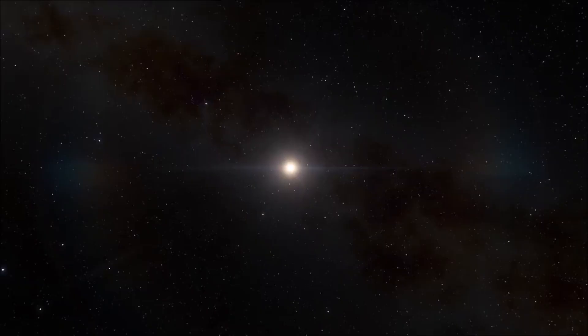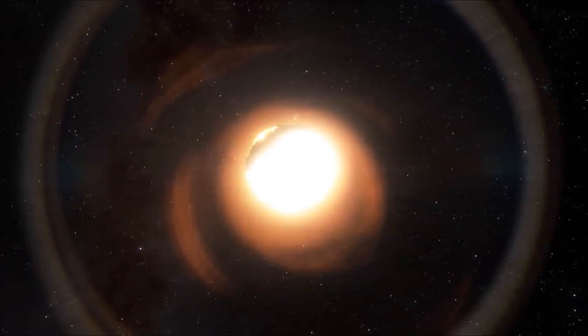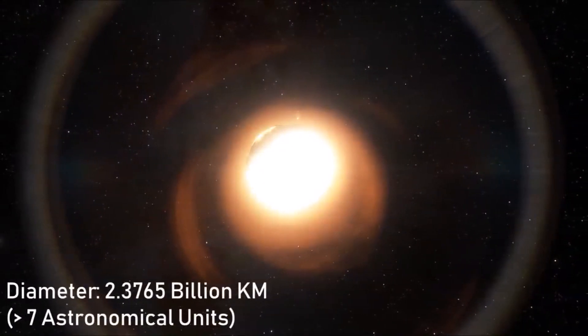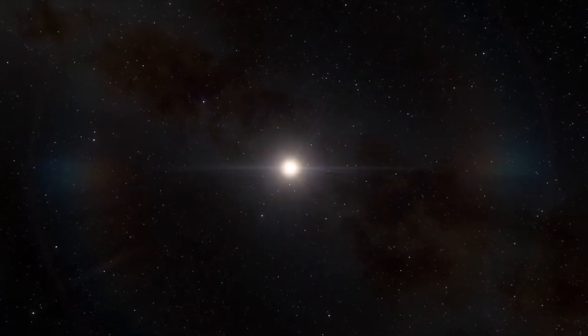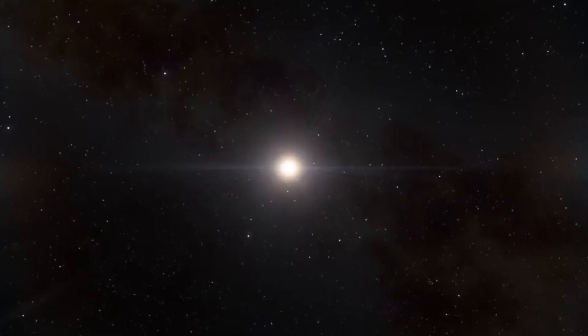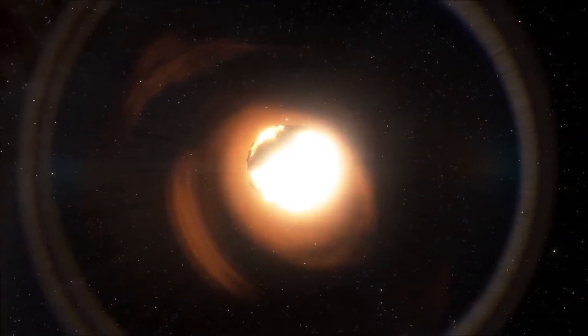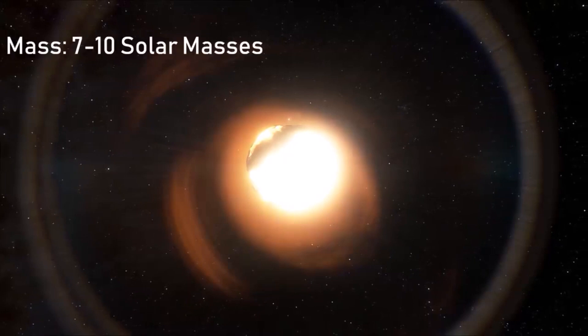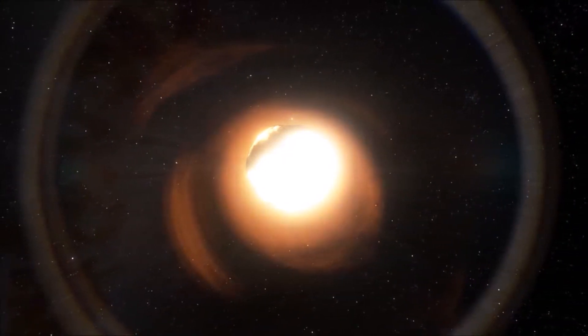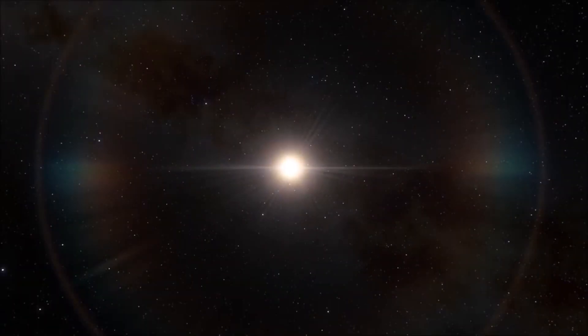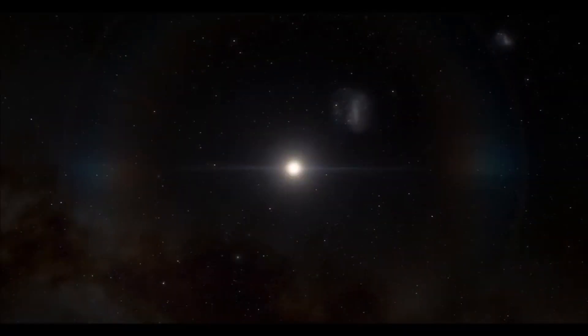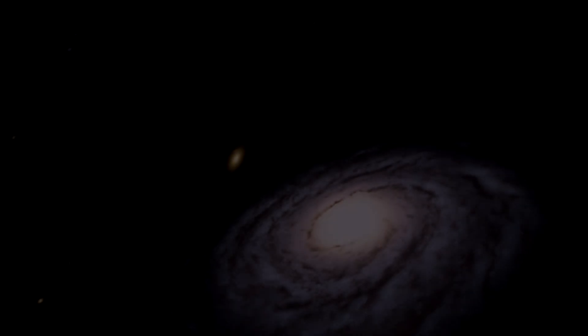UY Scuti is a red hypergiant variable star located approximately 5,100 light-years away from Earth in the constellation Scutum. This star is located in a central galactic location similar to Sagittarius A, the black hole at the center of the Milky Way. The star's radius is 1,700 times greater than our Sun at just seven astronomical units in diameter. We predict that despite its massive size difference, the star's mass will only be between seven and ten times that of the Sun. This is far from the record of the most massive star ever discovered. The reason for this is that star size and mass do not correlate linearly.